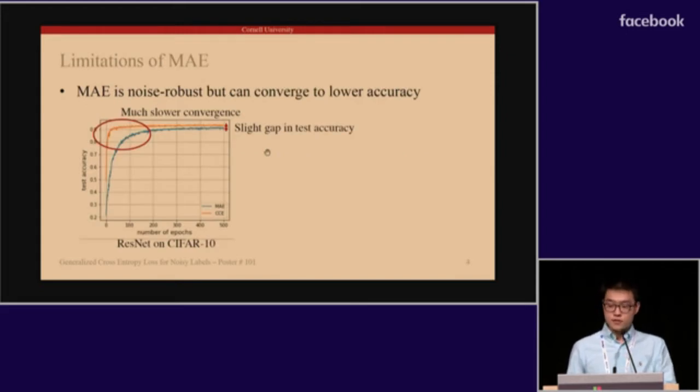However, despite the theoretical guarantees, mean absolute error can lead to poor performance of classification accuracy.